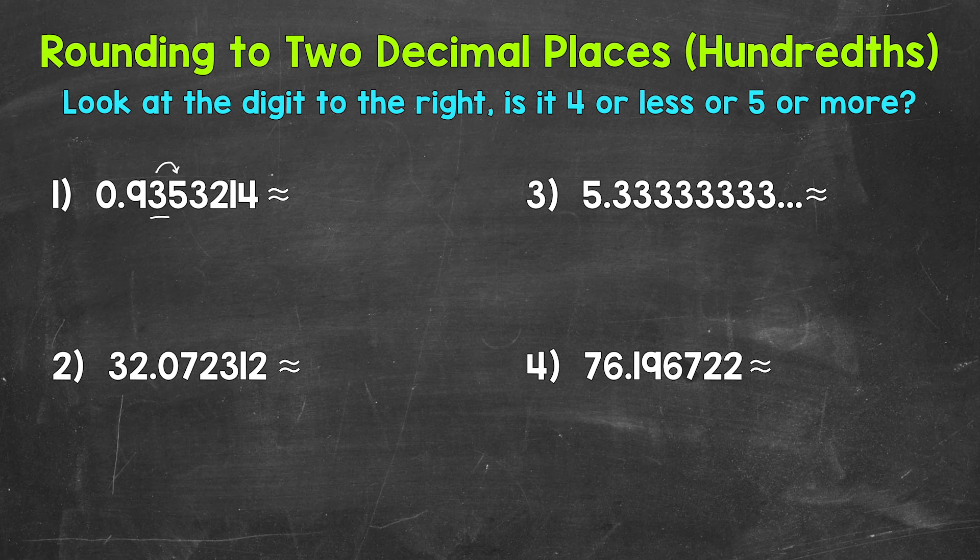Take a look to the right in the thousandths place. We have a five. Basically, we are seeing if this is closer to ninety-three hundredths or ninety-four hundredths. That digit to the right tells us this. We have a five. Five is five or more, so we round up. This decimal rounds to ninety-four hundredths.